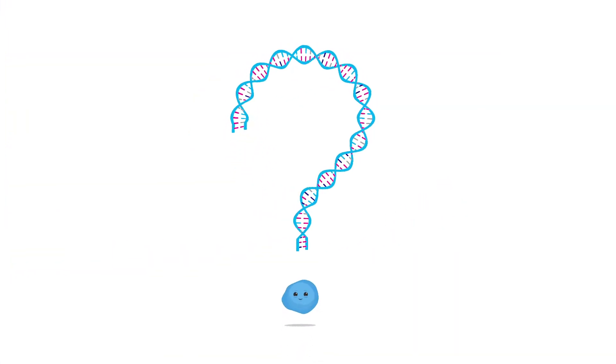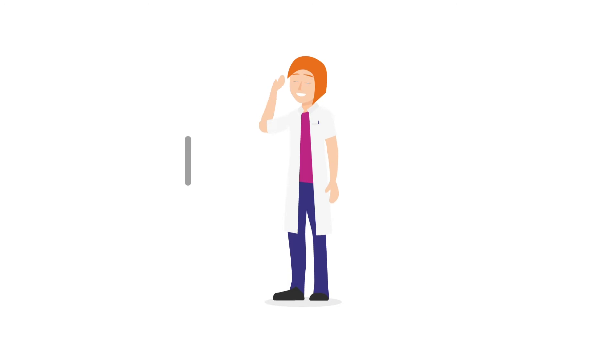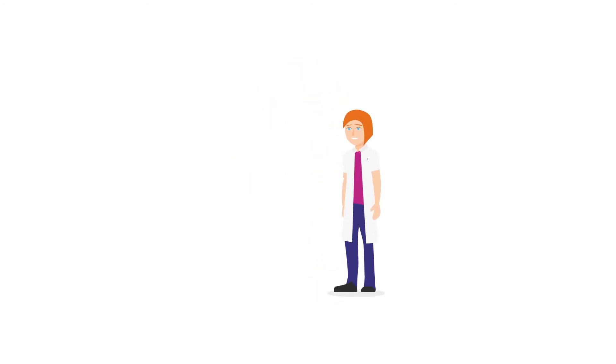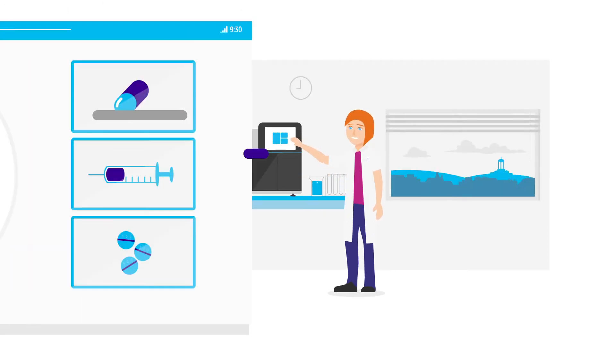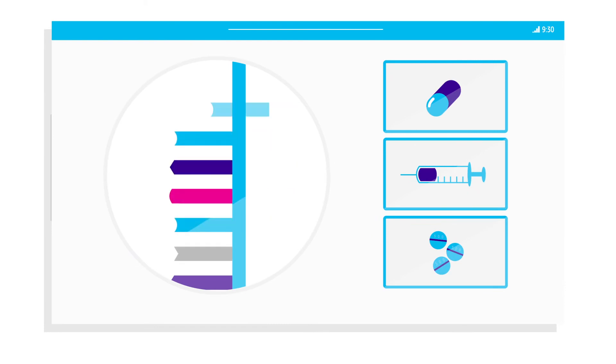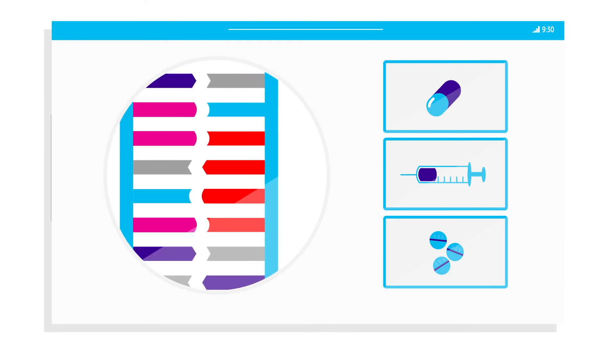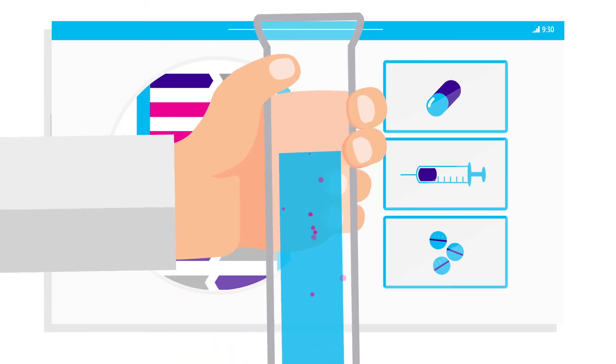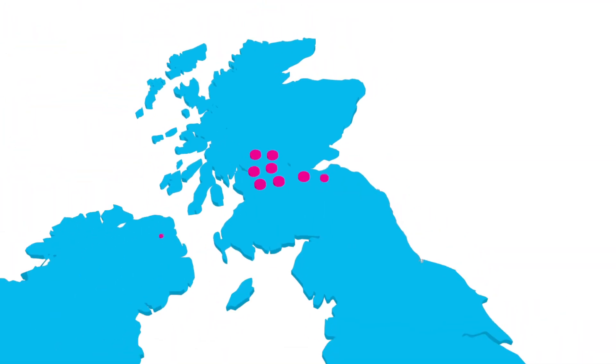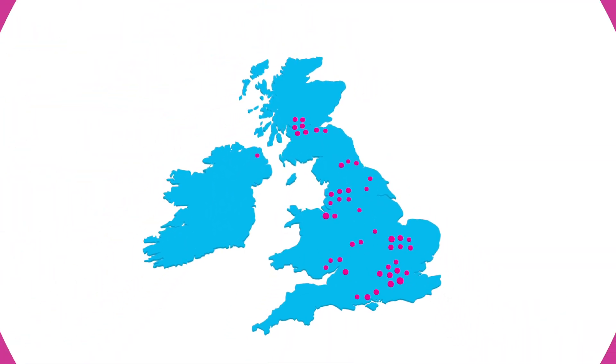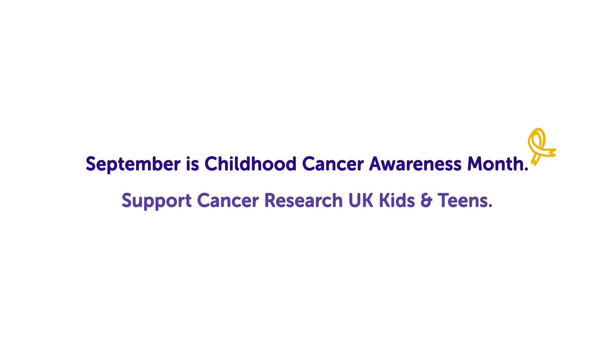But we don't yet know exactly how it occurs. Katrin Ottersbach at the University of Edinburgh is developing a way to study what happens, spot any markers of leukemia earlier and, crucially, allow us to test potential new treatments. Across the country, Cancer Research UK is funding work like this to better understand cancers affecting children and young people and to develop new, better and kinder treatments.